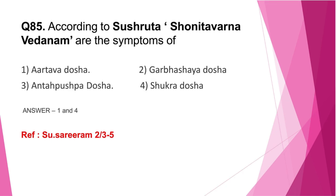Question number 85: According to Sushruta, Shonida Varna Vedanam are the symptoms of — Aartava Dosha, Garbhashaya Dosha, Andha Pushpa Dosha, Shukra Dosha? In Sushruta, Shukra Shonida Shuddhi Sthana describes the respective Dosha Varna Vedana — Vata Varna Vedana, Shonida Varna Vedana, etc. — attributed to both Shukra as well as Aartava Dushti. So the correct answer is option 1 and 4.